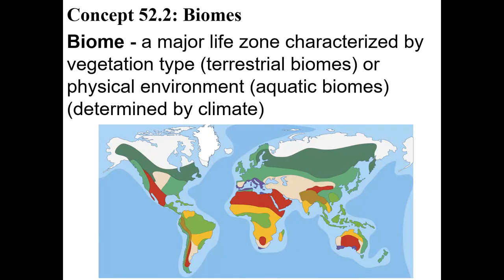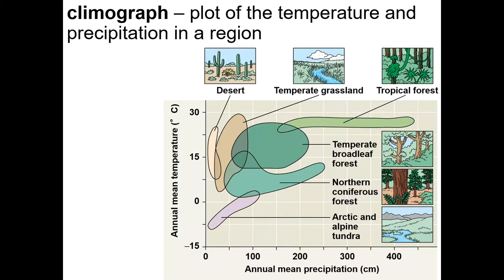Chapter 52. A biome is a large ecosystem with very similar vegetation throughout. The physical environment is very similar — it has very similar rainfall and temperature throughout the ecosystem.